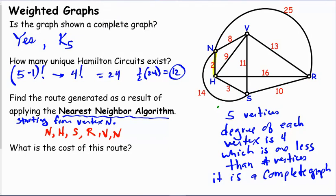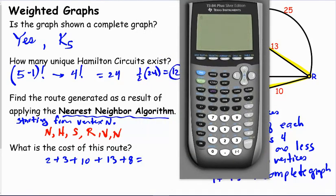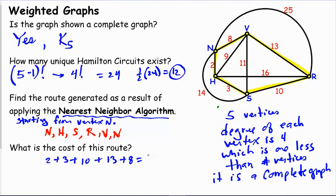Now we can find the cost of this route. So we're going to go from N to H to S to R to V back to N. And we want to tally each of the weights along the way. So we have from N to H is 2. From H to S is 3. From S to R is 10. From R to V is 13. And from V back to N is 8. And when we add these up, we have 36.